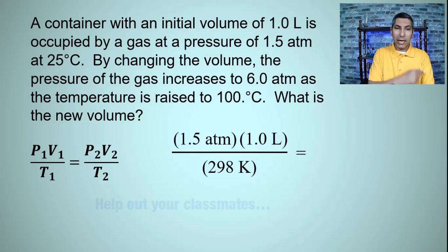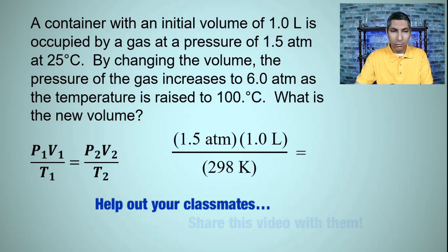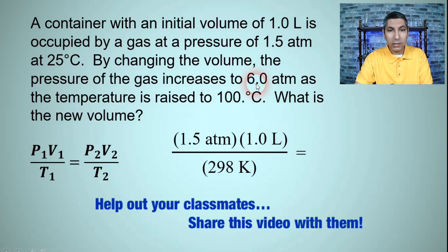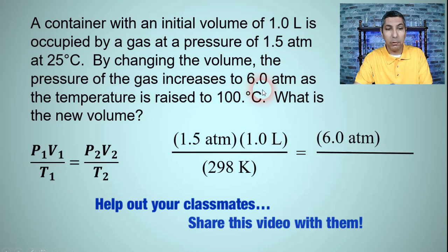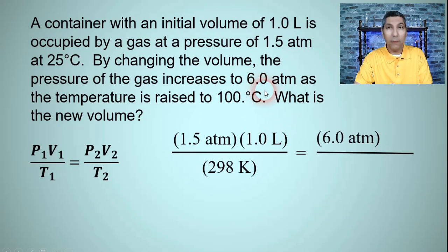Now on the other side of the equal sign, my P2, the final pressure, is 6.0 atmospheres. My V2, the final volume, is what I'm solving for. The question says what is the new volume? So we're solving for V2. And of course the final temperature, the T2, is 100 degrees Celsius. Convert that to kelvins and that's 373 kelvins.